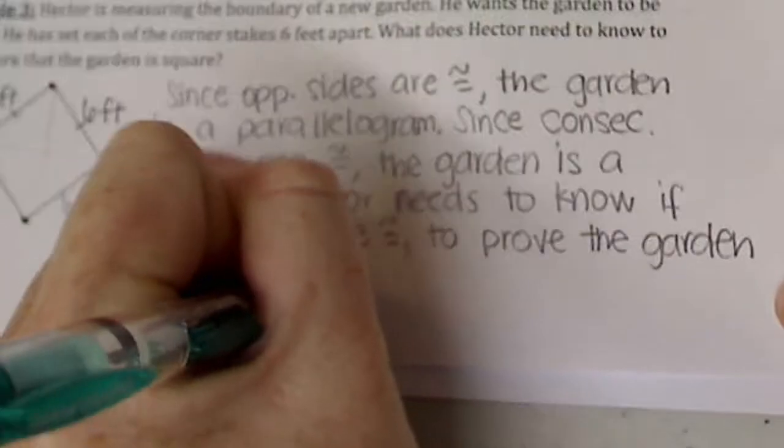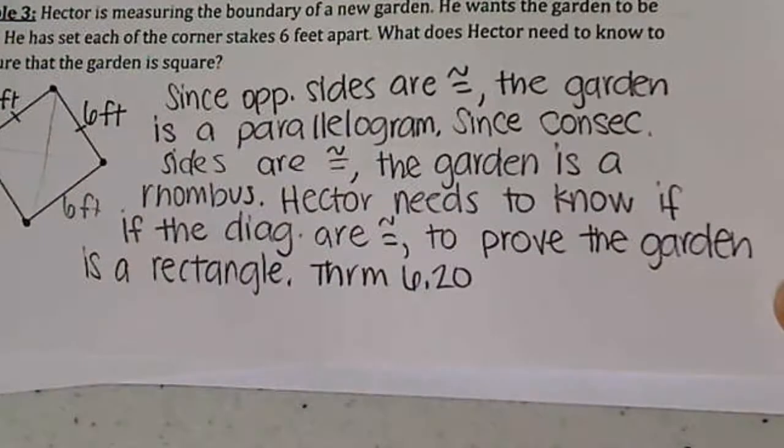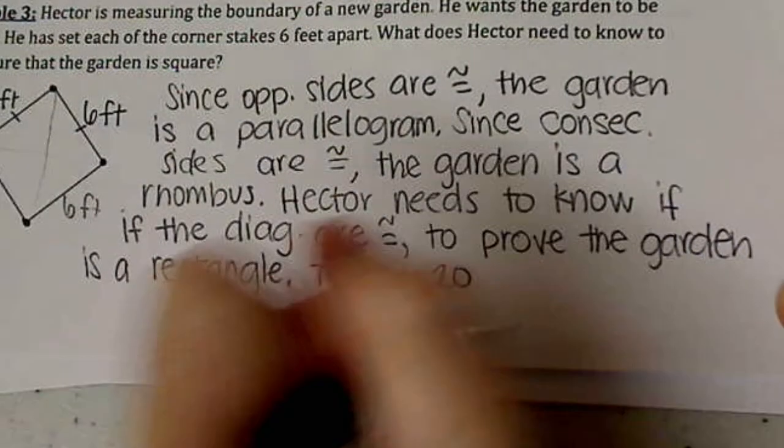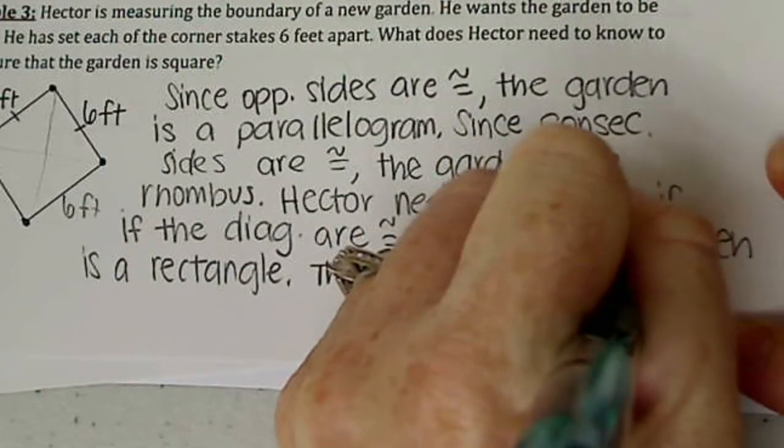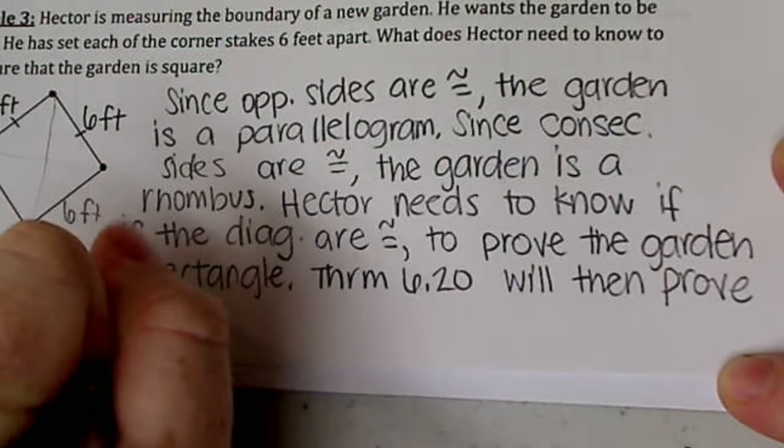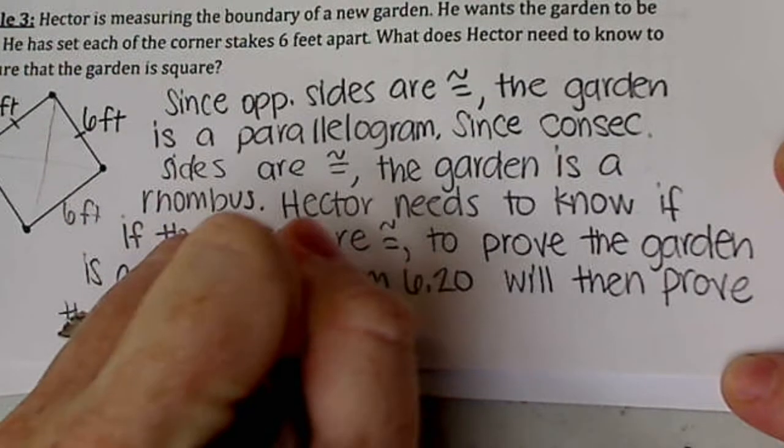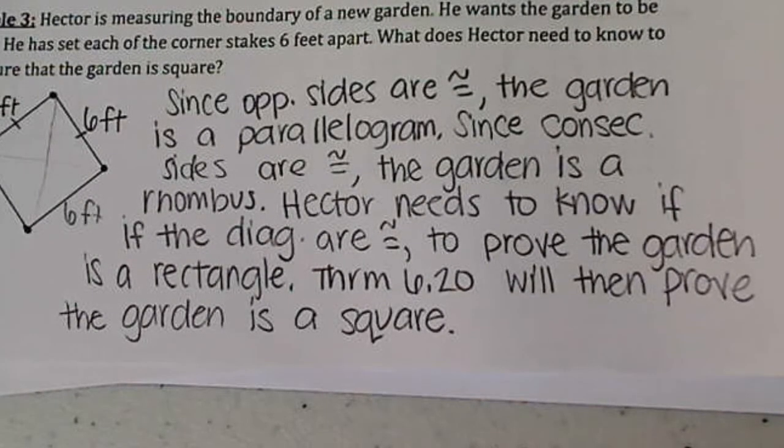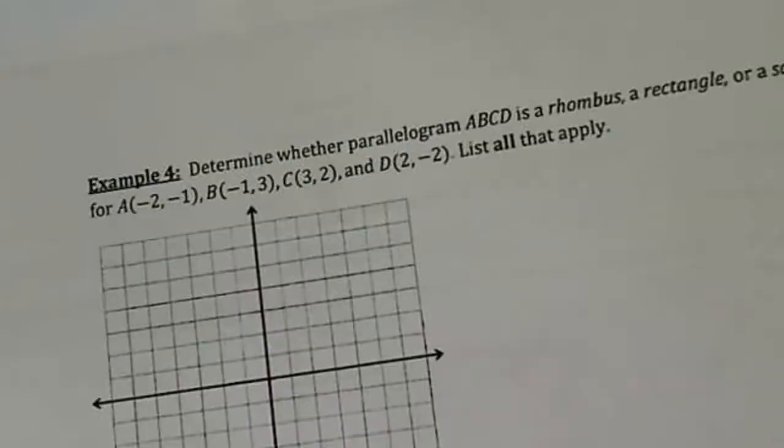Why do you need to know that? Well, theorem 6.20 states that if a quadrilateral is a rhombus and a rectangle, then it is a square. So theorem 6.20 will then prove the garden is a square. Okay. So remember, parallelogram first, then rhombus, then rectangle, and finally a square. Go ahead and turn your paper over and let's look at example four.